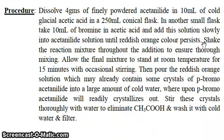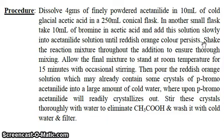What is the procedure? Dissolve 4 grams of finely powdered acetanilide in 10 ml of cold glacial acetic acid in a 100 to 150 ml conical flask. In another small flask, take 10 ml of bromine in acetic acid and add this solution slowly into the acetanilide solution until a reddish orange color persists.